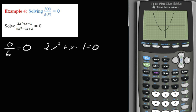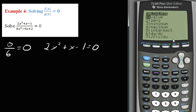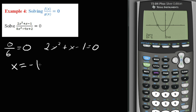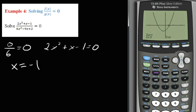The numerator is a quadratic with two visible zeros. Using Second, Trace, Zero, we find the left bound, right bound, and guess for the first zero: x equals negative 1. For the second zero, set the left boundary below the x-intercept, enter the right boundary, and guess: x equals one half. The idea behind solving this fractional equation is that it is the numerator that makes the equation equal to zero, so we set only the numerator equal to zero and solve.